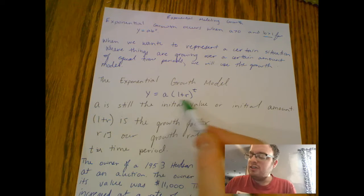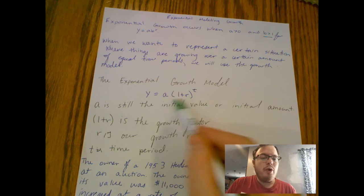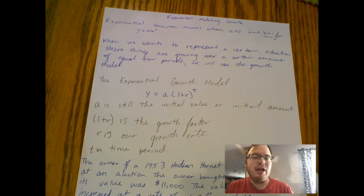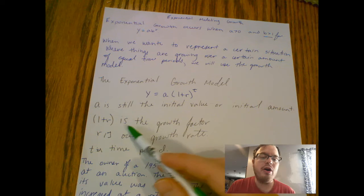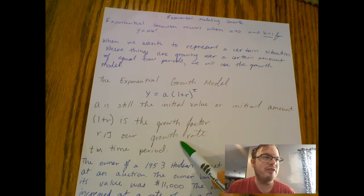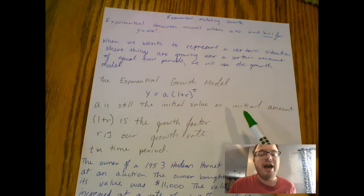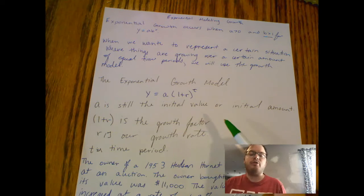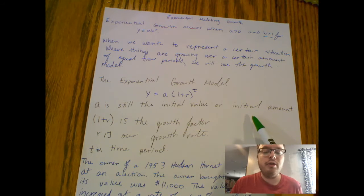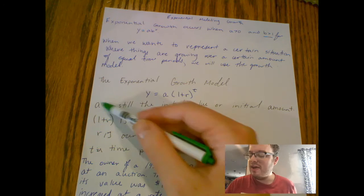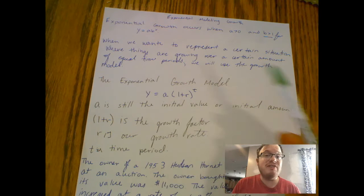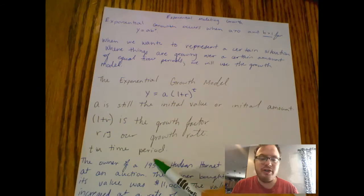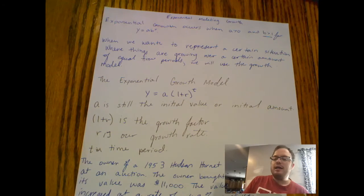The nice thing about this equation versus the one we had before is a is still the initial value or the initial amount. One plus r, now this is no longer b, one plus r took the place of b. One plus r is what we call the growth factor, where r is the growth rate. And then t, as you can probably guess, took the place of x. But t is just going to be time, the increments of time period.